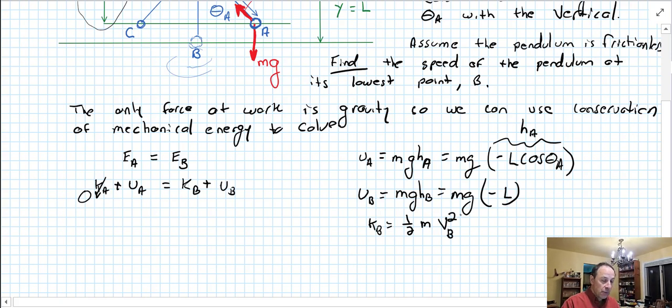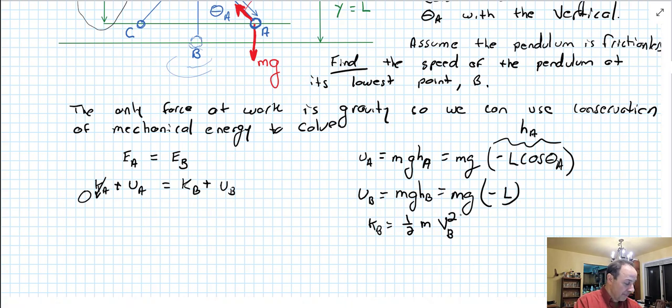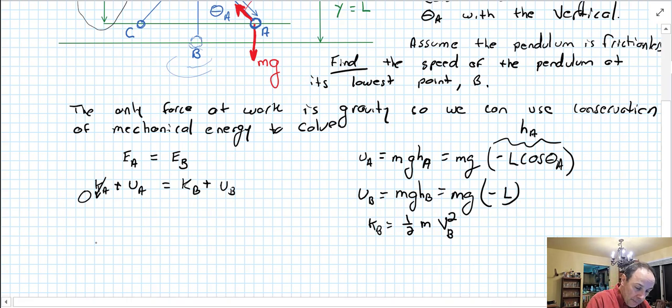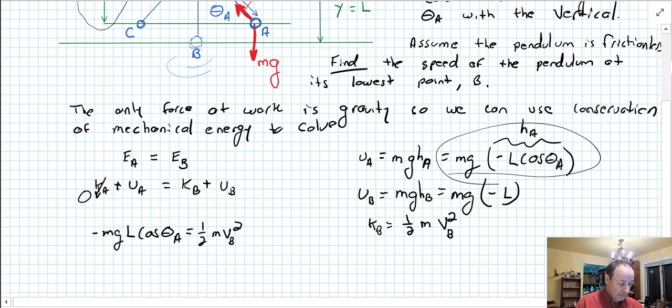Now we're going to put those things, those quantities in and simplify. So U_A is minus mgl cosine theta A. That's just this right here. That equals the kinetic energy at B, which is one half m v_B squared, minus mgl.